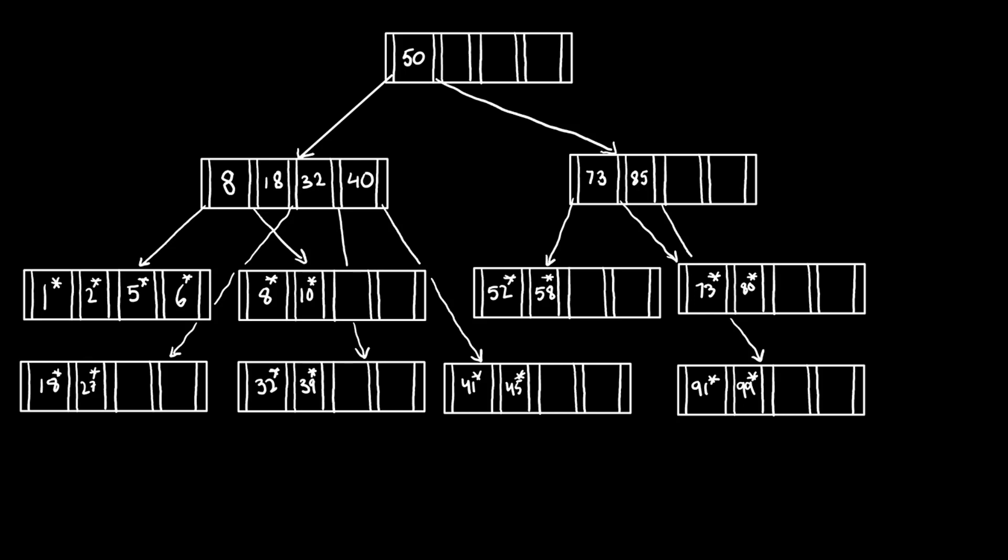Today, I'll be going over methods for inserting into B plus trees. Consider this B plus tree with root 50. The data entries are marked with an asterisk on the top right corner.